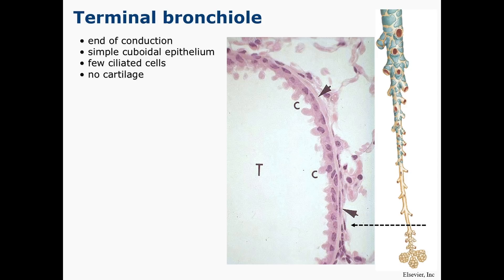The epithelium contains mostly club cells, or bronchiolar exocrine cells. You might see these referred to in older texts as Clara cells, but this name is no longer in use as of 2014 when they underwent a name change to club cells. This is because Max Clara, for whom these cells were named, was a Nazi anatomist who discovered these cells by experimenting on murdered prisoners from concentration camps during World War II. Clearly, these actions are deeply antithetical to the values of modern medicine.